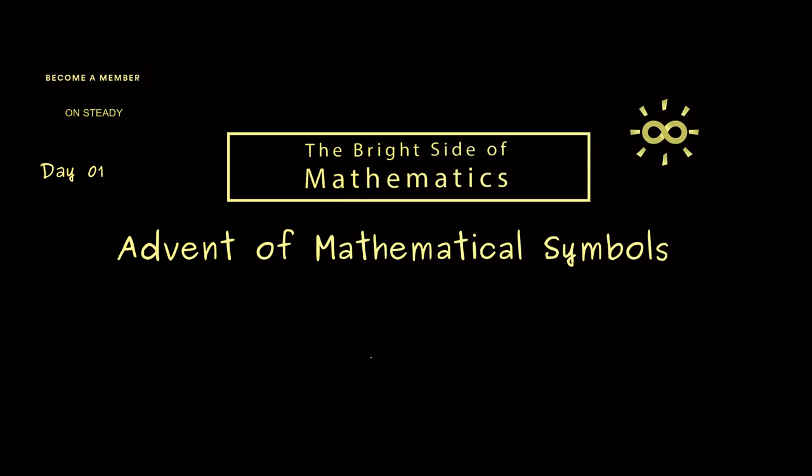The mathematical symbol of today is the Kronecker delta, written as lowercase delta ij.